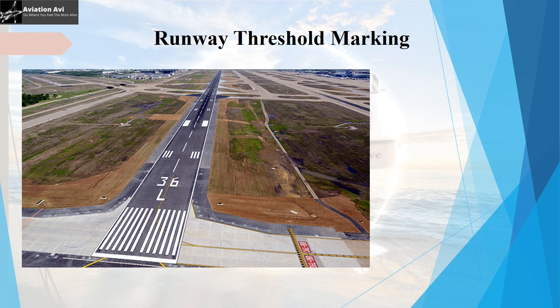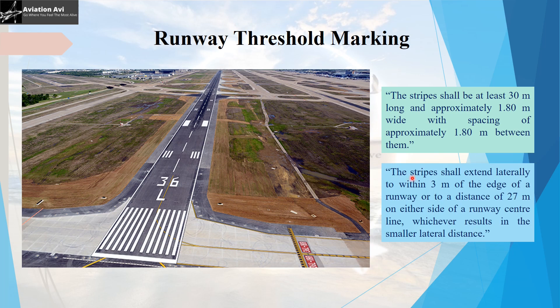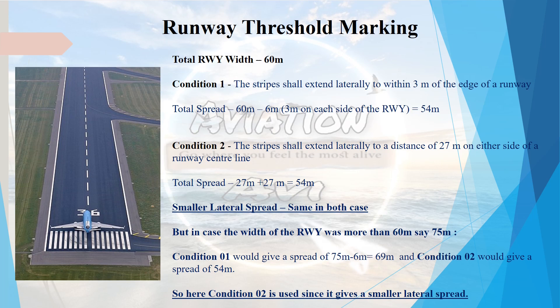The runway threshold is the beginning of the portion of the runway usable for landing. It is designated by threshold stripes that have a length of 30 meters and a width of 1.8 meters, with a spacing of 1.8 meters between each stripe. The spacing between the innermost stripes is double that — 3.6 meters. As per ICAO Annex 14, the stripes shall extend laterally to within 3 meters of the edge of the runway.